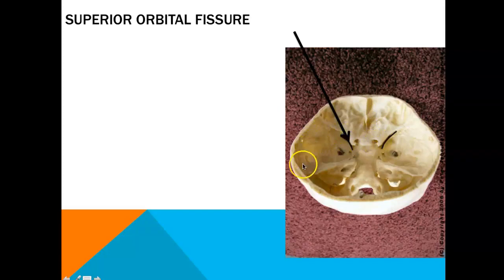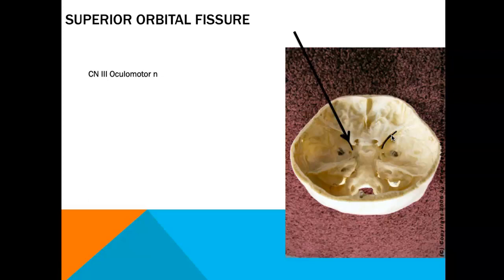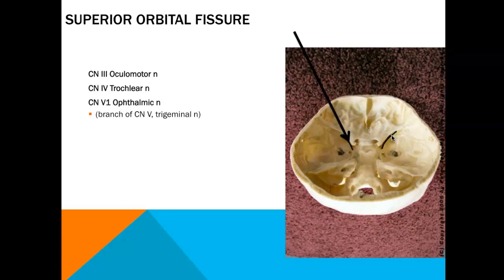Now let's discuss the cranial nerves that exit through the superior orbital fissure. Located in the middle cranial fossa, the superior orbital fissures transmit cranial nerve III (oculomotor), cranial nerve IV (trochlear), cranial nerve V1 — the ophthalmic branch of the trigeminal nerve — and cranial nerve VI (abducens). Note that V1 is the first of three branches of the trigeminal nerve, cranial nerve number five.